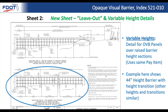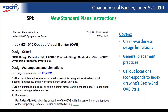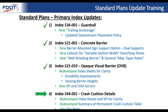The SPI has been redeveloped, covering crash worthiness design limitations. The opaque visual barrier is only intended as a visual screen, designed to withstand wind loading, light debris, and minor vehicle contact. It is not intended to resist errant vehicle impact loads — it is designed to yield if hit by a serious vehicle strike and let the concrete barrier do its job. There is also guidance on general placement practices for split sections, which side to put it on, call-out locations, and pay item information for opaque visual barrier.